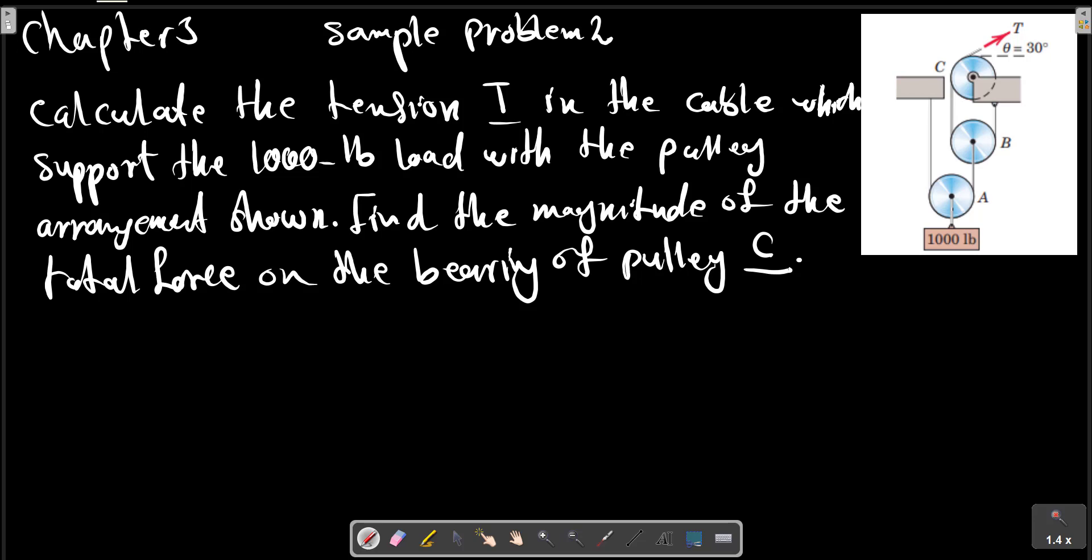Chapter 3 Sample Problem 2. Calculate the tension T in the cable which supports the 1000 pound load with the pulley arrangement shown in the picture. Find the magnitude of the total force on the bearing of pulley C. Each pulley is free to rotate about the bearing and the weight of all parts are small compared with the load.